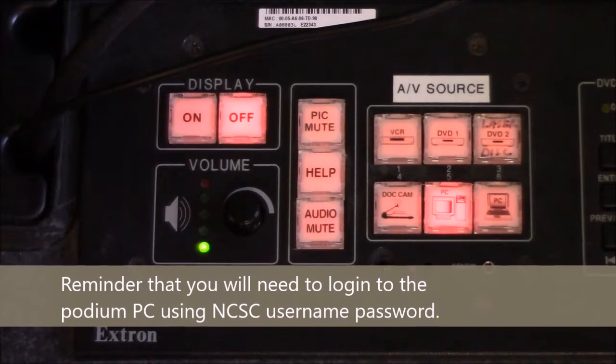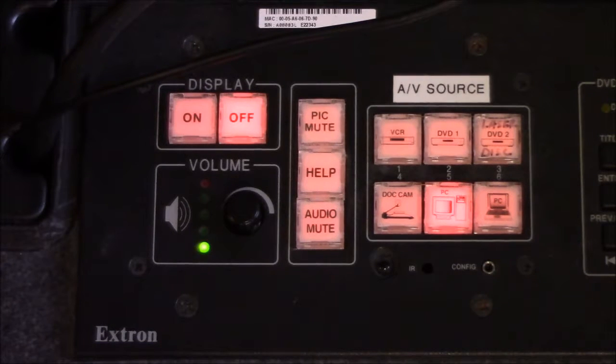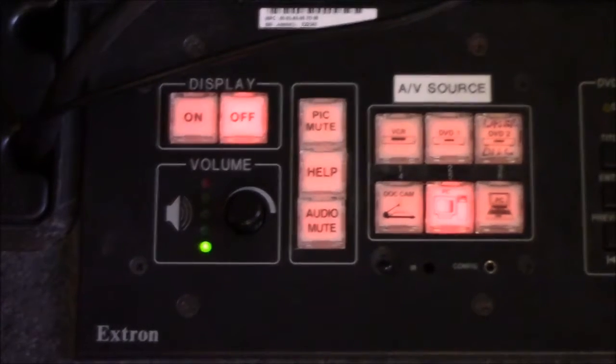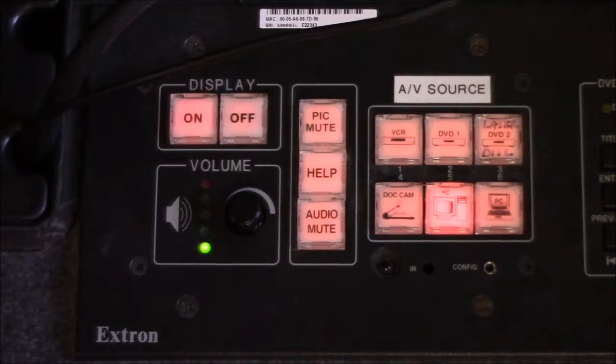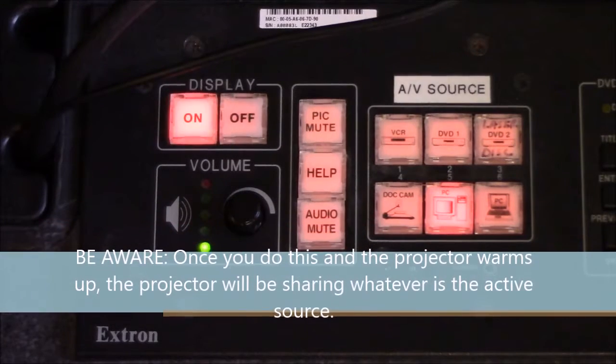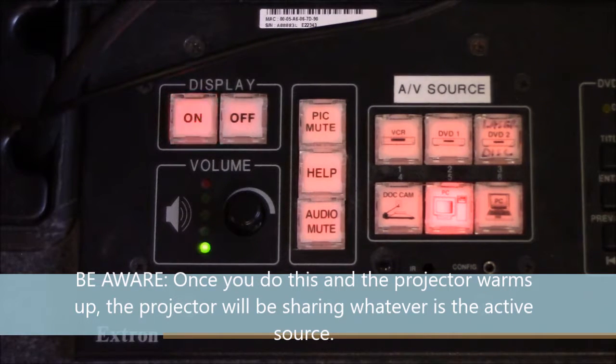So in this particular classroom, the console has this sort of push button interface, which you can find as the black panel on one of the top corners or somewhere on the instructor podium. And probably the first thing we'll want to do is fire up the projector up on the ceiling. And to do that on these, we just push the on button under display and just push it down until it makes a hard click and then starts blinking. And then that will fire up the projector and begin warming up, which will take about a minute or so.